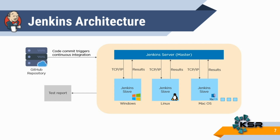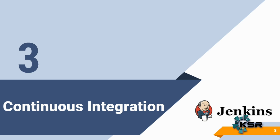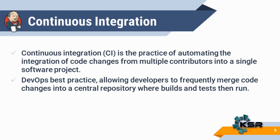Let's move to the interesting topic: continuous integration, which is what Jenkins is all about. Continuous integration is a practice of automating the integration of code changes from multiple contributors into a single software project. It is a DevOps best practice that allows developers to frequently merge their code changes into a central repository where builds and tests are run. Continuous integration is preferably a nightly build and integration process which runs at day's end when everyone has gone home and the application is not in use — that is called the nightly integration process, occurring only once a day.